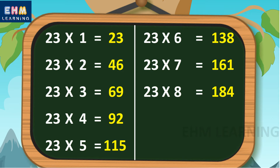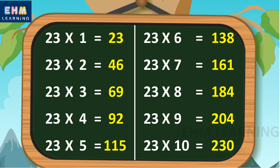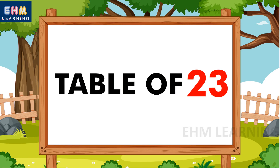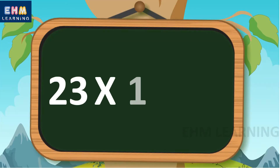23 8s are 184, 23 9s are 207, 23 10s are 230. Once more — Table of 23.